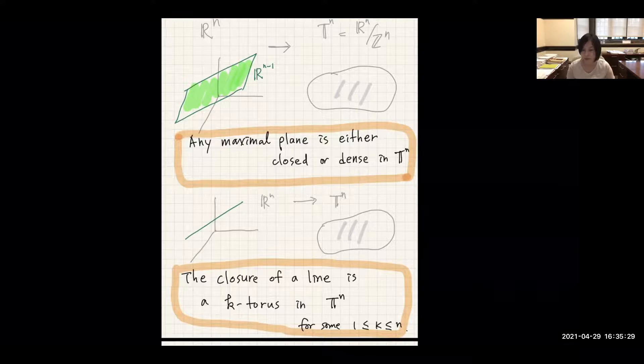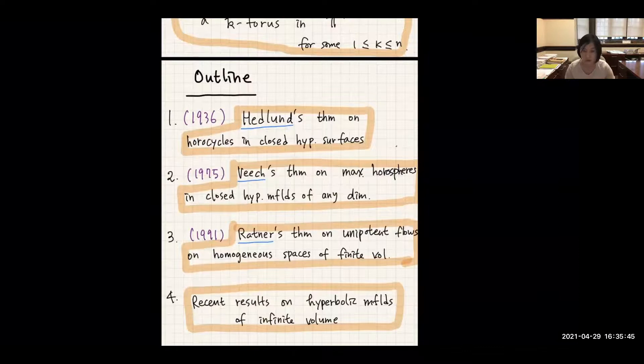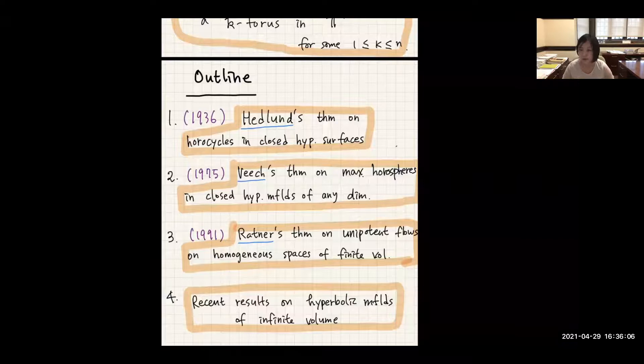I want to discuss a generalization of this phenomenon in hyperbolic manifolds. Here is the outline: I'll begin with Hedlund's 1936 theorem on horocycles in closed hyperbolic surfaces, then discuss Beach's generalization to maximal horospheres in closed hyperbolic manifolds of any dimension, then Ratner's theorem on unipotent flows on homogeneous spaces of finite volume, and finally some recent results on infinite-volume hyperbolic manifolds.